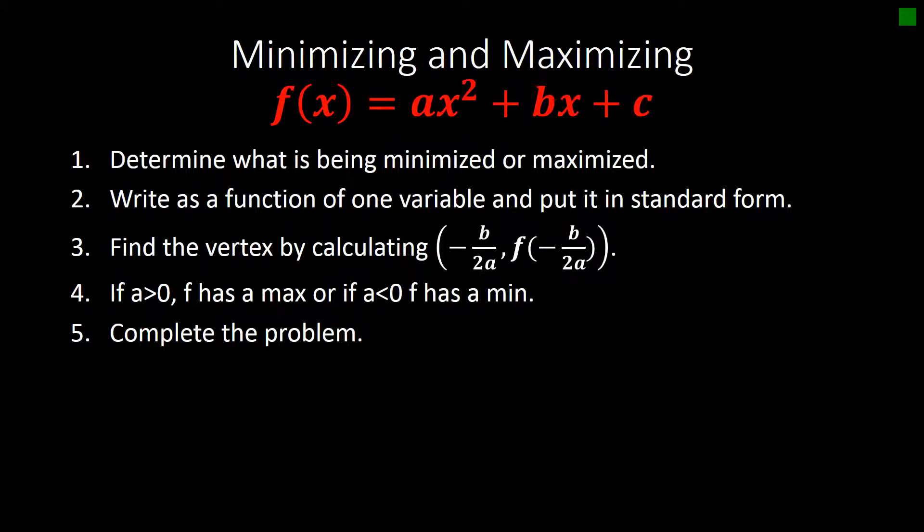Number three, we can find the vertex by calculating negative b over 2a and the function evaluated at negative b over 2a. Remember, the vertex is going to give us the min or the max. If a is greater than zero, f has a maximum value. Or if a is less than zero, f has a minimum value.